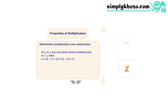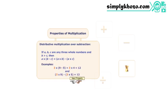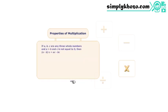The associative property helps us in simplifying calculations. We can simplify calculations by breaking the whole number to its nearest hundred.